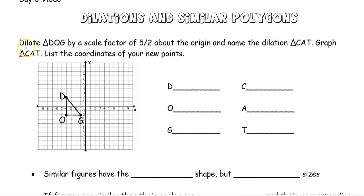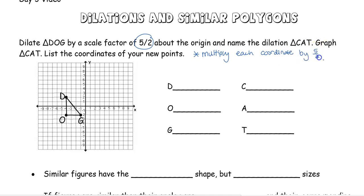We are going to start by dilating triangle DOG by a scale factor of 5 halves. Remember, a scale factor is a multiplier, so what we're going to do is multiply each coordinate — that's the x and the y coordinate — by 5 halves, which is just 2.5, and that's going to give us our new image, triangle CAT.